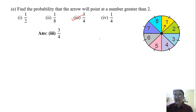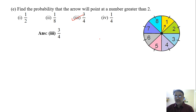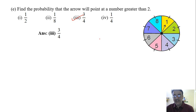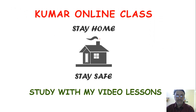So we can frame so many questions over here — what is the probability of getting a number less than 4, what is the probability of getting a number more than 5, and like that we can frame so many questions. Okay, so this is the last question, and we'll see the next case study question in the next one.